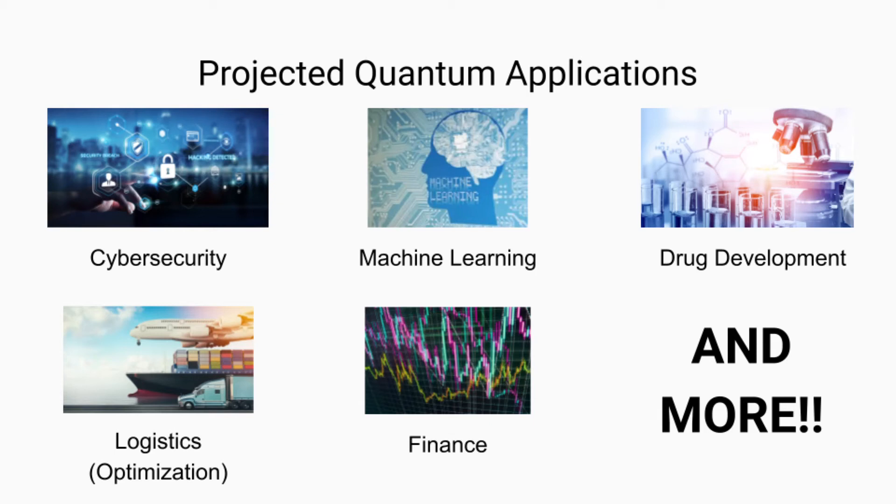And finally, we have finance. This is sort of like an extension of optimization as well. But quantum computers can optimize like auto trading in the stock market and different things like that. So quantum computing definitely has its applications in finance as well.